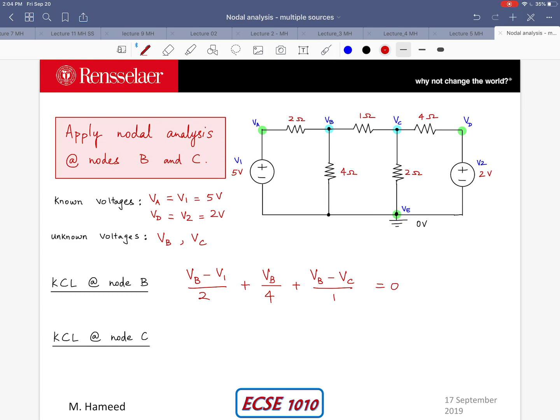Similarly for node C I have VC minus VB divided by 1 ohm plus VC divided by 2 ohms plus VC minus the known voltage VD, which also equals V2, divided by 4 ohms equals 0.